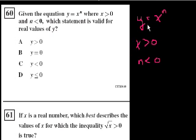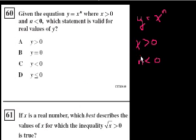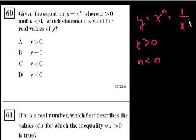Your gut reaction might be to say, oh, if I have a negative exponent, maybe I somehow end up with a negative number. But you have to remember, a negative exponent just tells you it's really the inverse of the positive exponent. So this is equal to 1 over x to the minus n.